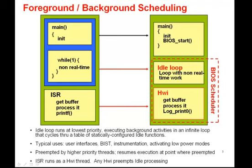Just because the idle loop executes at the lowest priority doesn't mean that the functions run from there are unimportant. Typical uses for the idle loop include user interface code, built-in system test, and it's especially good for activating low power modes of the device or system, since it's assured at that point of not interfering with any fundamental processing. The idle loop either needs to be invoked explicitly by the application calling the idle run API, or more commonly, by a task running at priority zero. For more information, you should view the online training module on tasking.